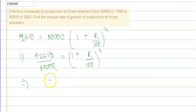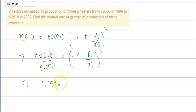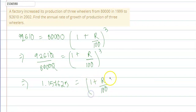9,261 divided by 8,000 gives us 1.157625, which is equal to (1 + r/100) whole cube.